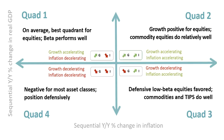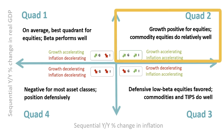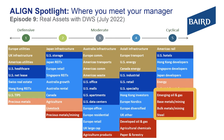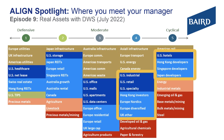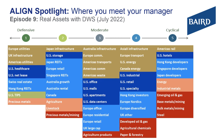In a Quadrant II environment where both growth and inflation are accelerating, more cyclical assets perform well. Within real assets, that's natural resource equities; within infrastructure, it's rails and energy infrastructure; within real estate, it's more cyclical and shorter duration buckets like storage or hotels with shorter duration leases. These tend to have strong returns, lower volatility, and a very high hit rate in that Quadrant II environment. So in a Quadrant II environment across real assets, we tilt towards those more cyclical buckets.